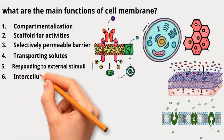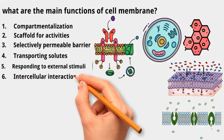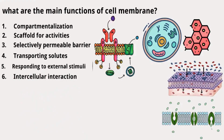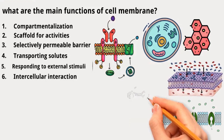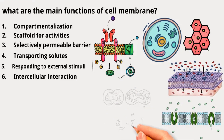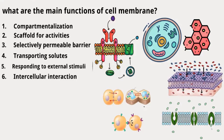Sixth, intercellular interaction: the plasma membrane of multicellular organisms facilitates interactions between neighboring cells. It allows cells to recognize and communicate with each other, stick together when needed, and exchange materials and information.